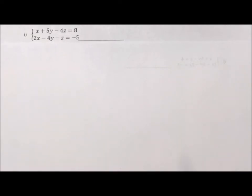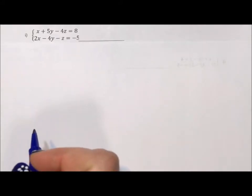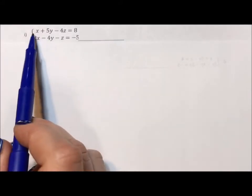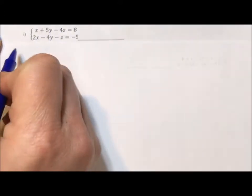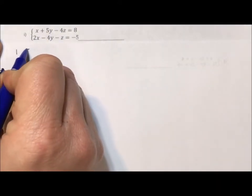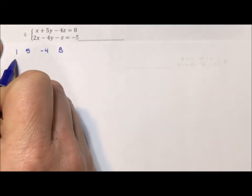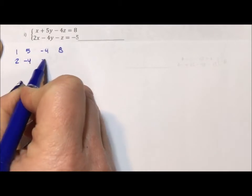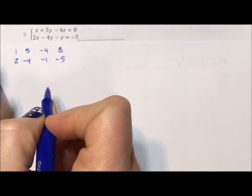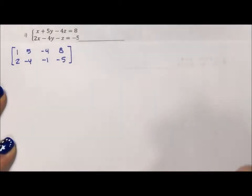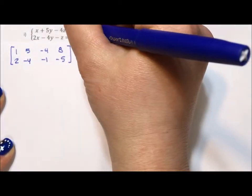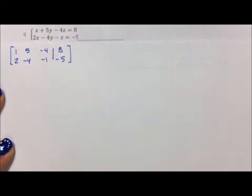If I'm going to do that, the first thing I need to do is take my system and write it as a matrix. So I'm going to come in here and I'm just going to look at the numbers of each equation. So my first equation becomes a 1, 5, negative 4, 8. My second becomes a 2, negative 4, negative 1, negative 5. To make this a matrix, I put brackets on either side. To make it an augmented matrix, I represent my equal signs with a line.